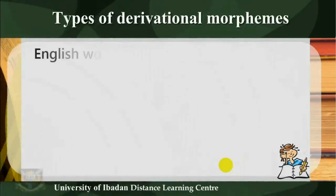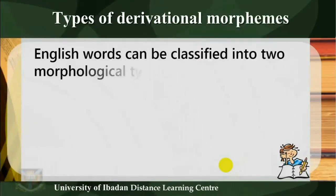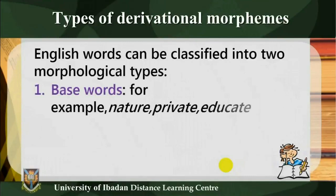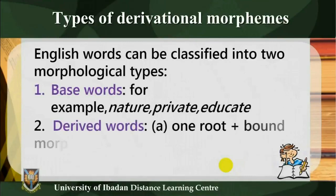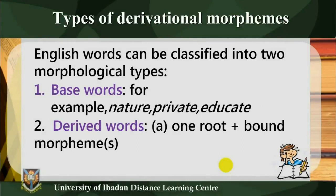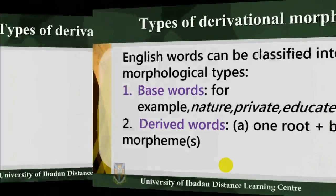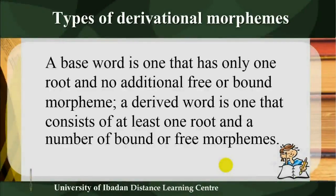Types of derivational morphemes: English words can be classified into two morphological types. One: base words — for example, nature, private, educate. Two: derived words — consisting of one root plus bound morphemes. A base word is one that has only one root and no additional bound morpheme. A derived word is one that consists of at least one root and a number of bound or free morphemes.